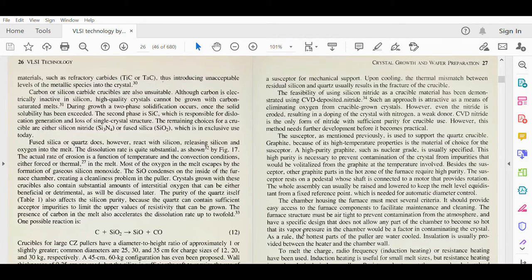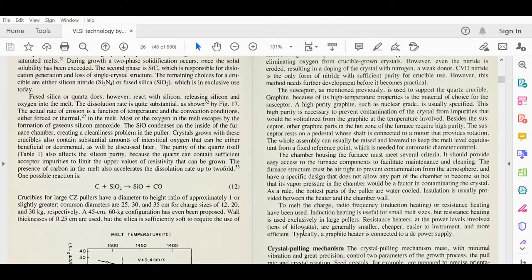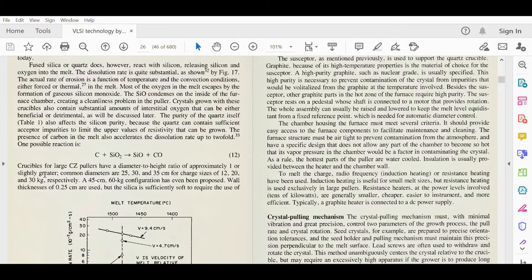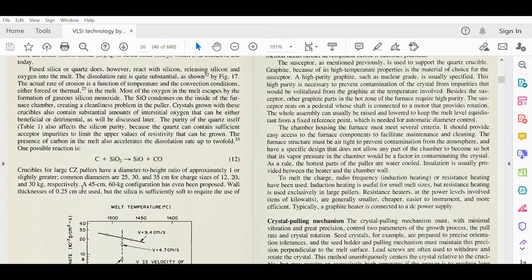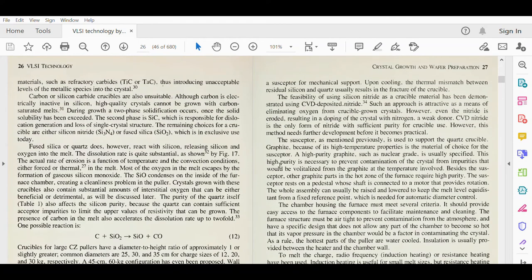C + SiO2 gives SiO (silicon monoxide) + CO. Crucibles for large CZ pullers have diameter to height ratio approximately one or slightly greater. Common diameters are 25, 30, and 35 centimeters for charges of 12, 20, and 30 kg respectively. A 45 centimeter, 60 kg configuration has even been proposed. Wall thickness of 0.25 centimeters are used, but the silica is sufficiently soft to require use of a susceptor for mechanical support. Upon cooling, thermal mismatch between residual silicon and quartz usually results in fracture of the crucible.